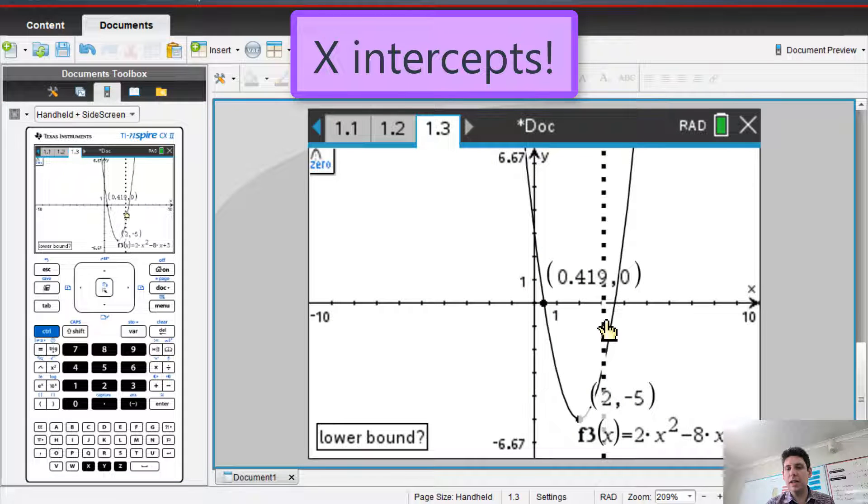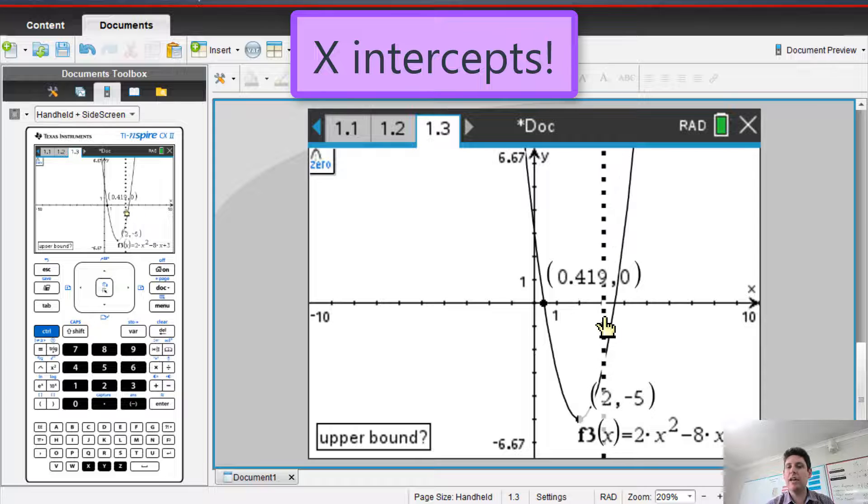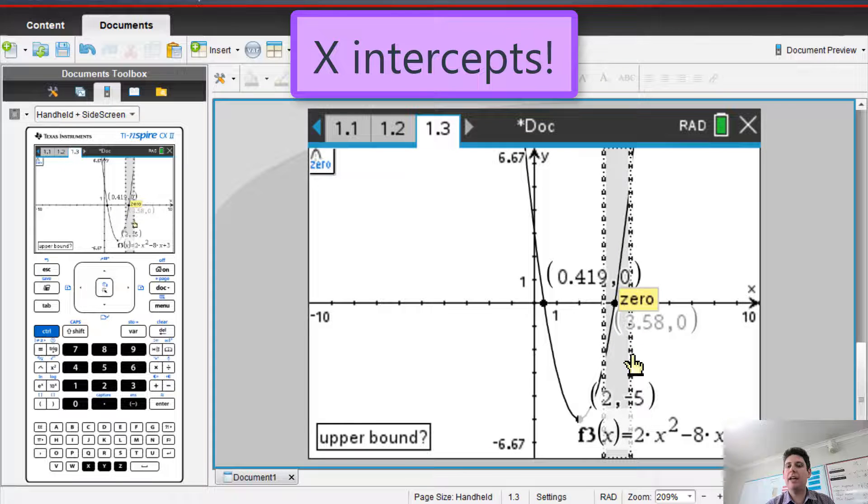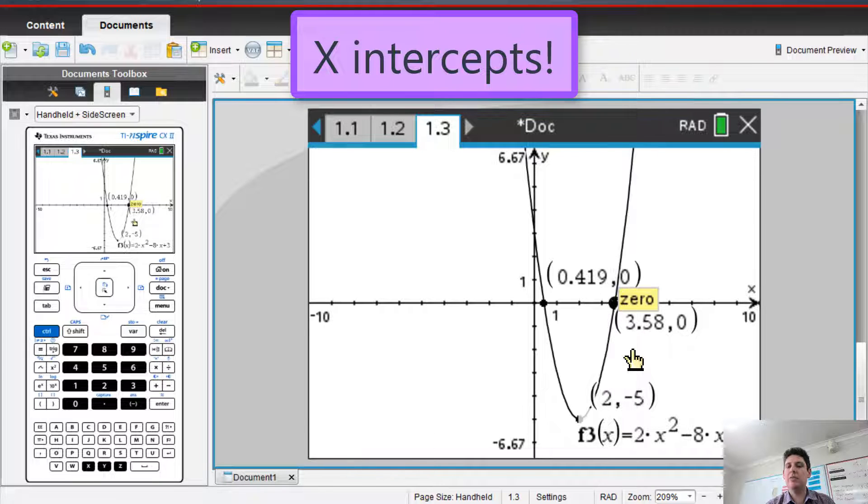Then click just left of the intersection of the x-axis and the curve. So just left of it. Drag. Click again in the middle of the pad. That's your second x-intercept.